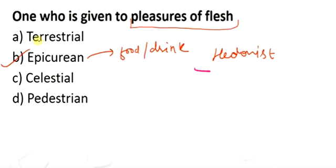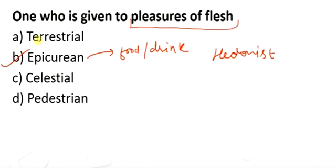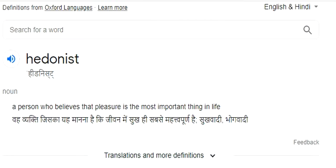They call it epicurean, and one word is hedonist. Hedonist is the person who believes that pleasure is the most important thing in life, means suki is the most important thing.